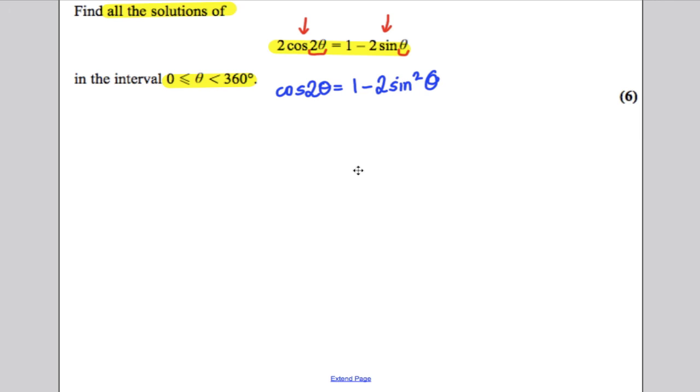Why is that the most useful one? Because then, everything in the equation would have sines in it, or numbers, and effectively, it would be a quadratic in terms of sine theta. So let's do that substitution.